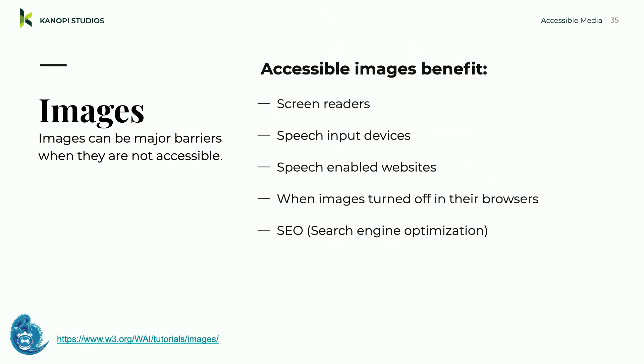Accessible images benefit screen reader users — text alternatives can be read aloud or rendered as braille. People using speech input software can focus on a button or linked image with a single voice command. On mobile, images can be turned off — living rurally where data gets eaten up, you turn images off, and without alt text you don't know what's on the page. Alt text also creates value for search engine optimization because images become indexable.